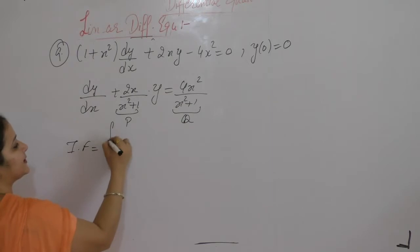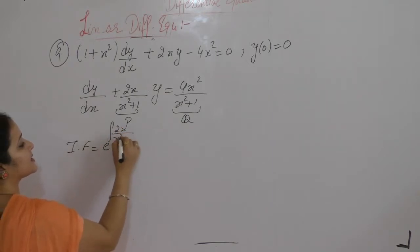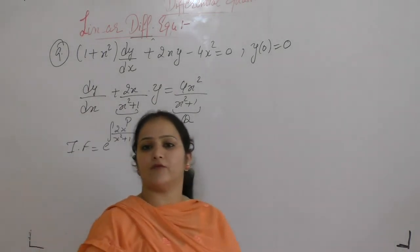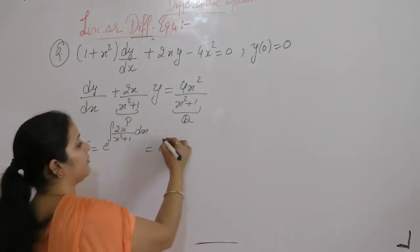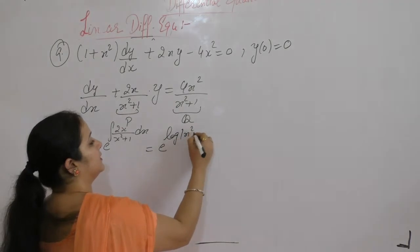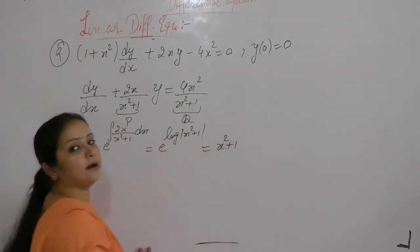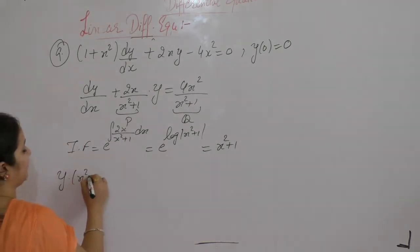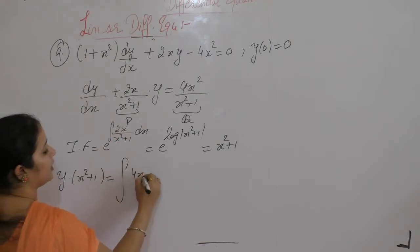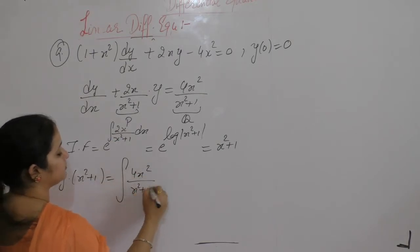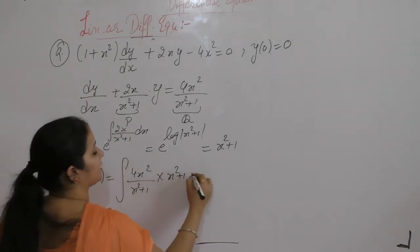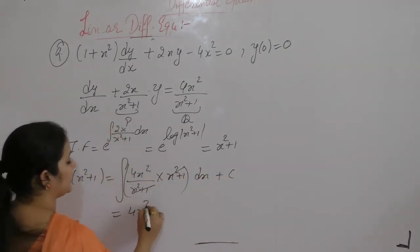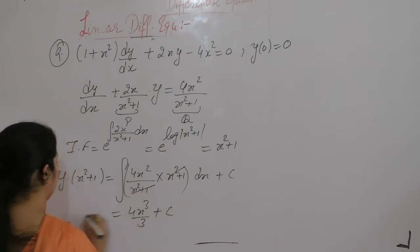Now find the integrating factor for 2x/(x² + 1). Using the formula: integral of f'(x)/f(x) equals log f(x), we get the integrating factor as x² + 1. Then y · (integrating factor) equals integral of q · (integrating factor) dx plus c. The integral of x² is x³/3 plus c.